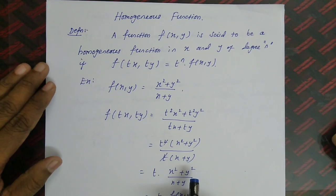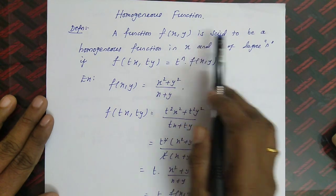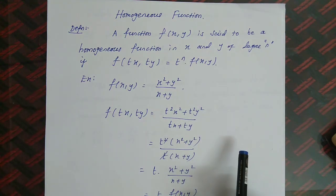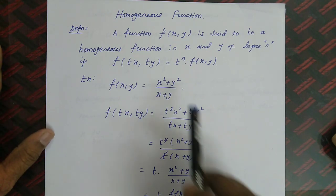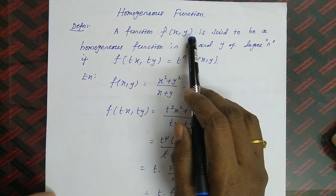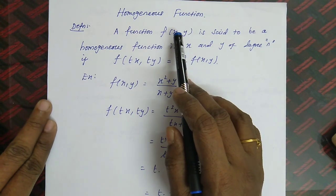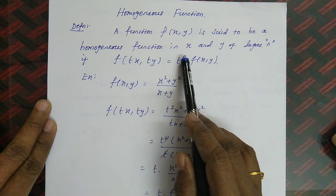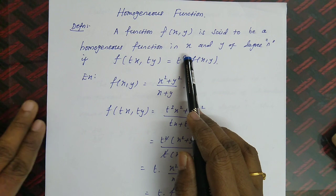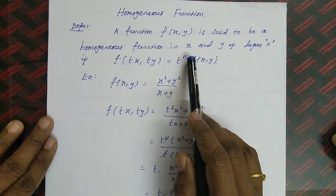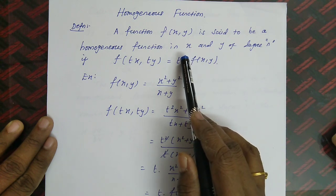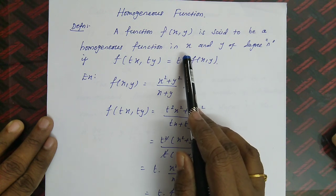A function f(x, y) is said to be a homogeneous function in x and y of degree n if f(tx, ty) = t^n · f(x, y). So a function is homogeneous if, when replacing x with tx and y with ty, the result is t raised to some power n multiplied by f(x, y). That power n is called the degree of the function.